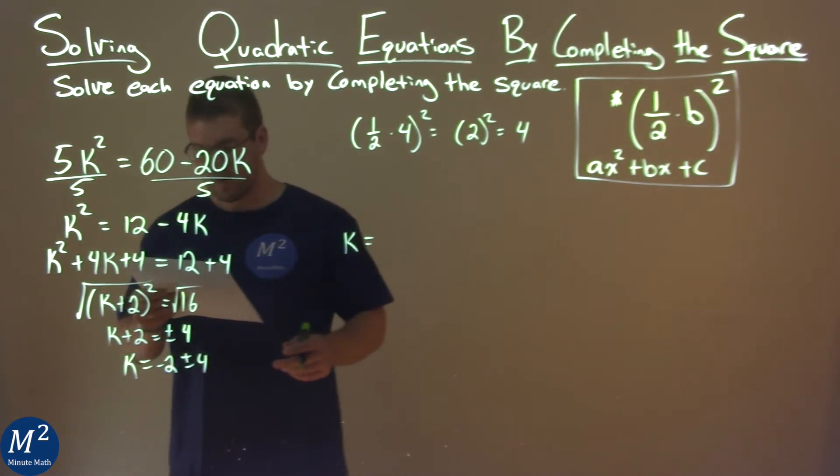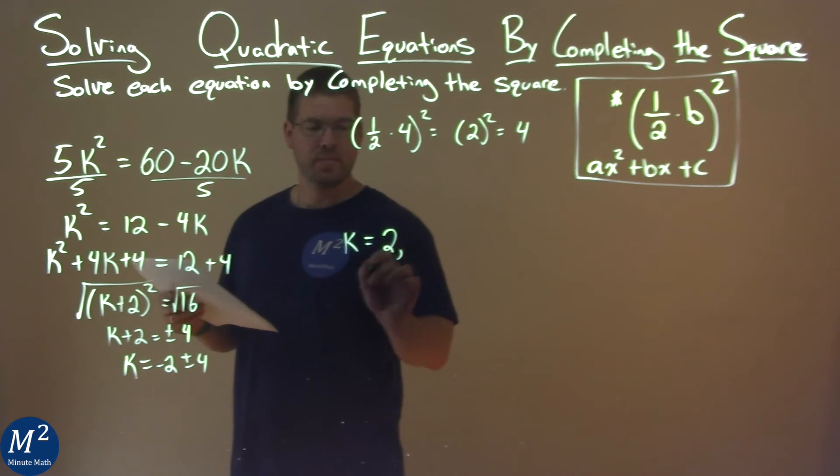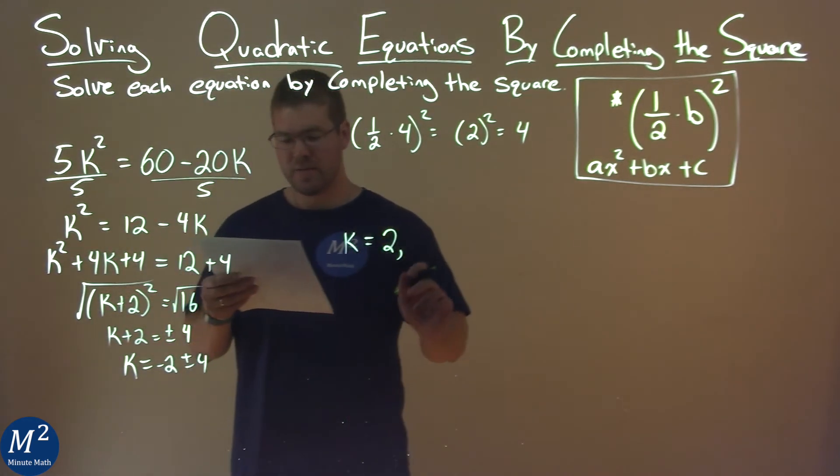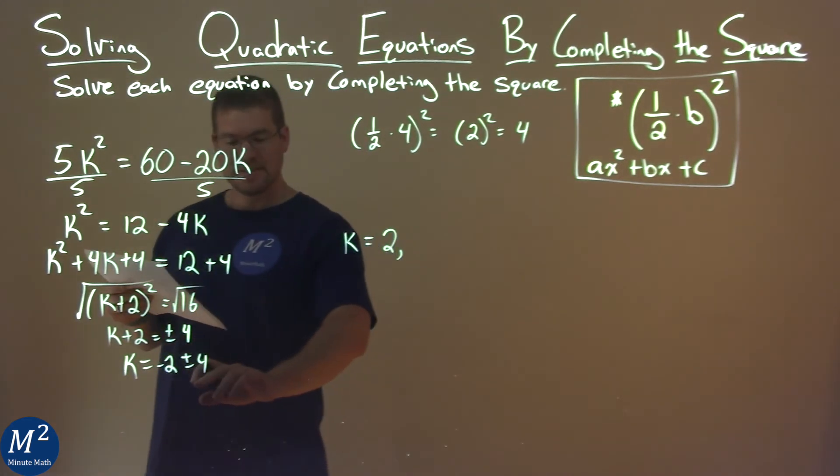Negative 2 plus 4 is a positive 2. Negative 2 minus 4 is a negative 6.